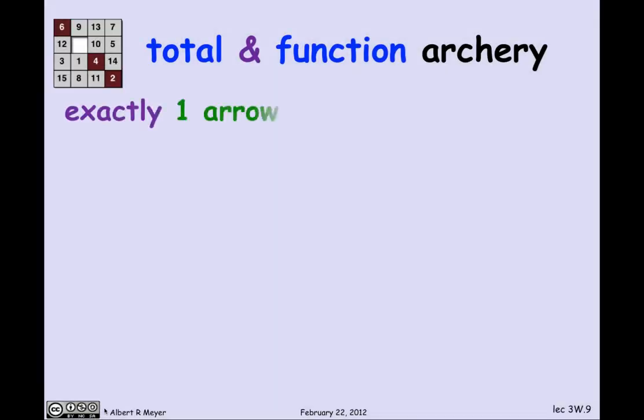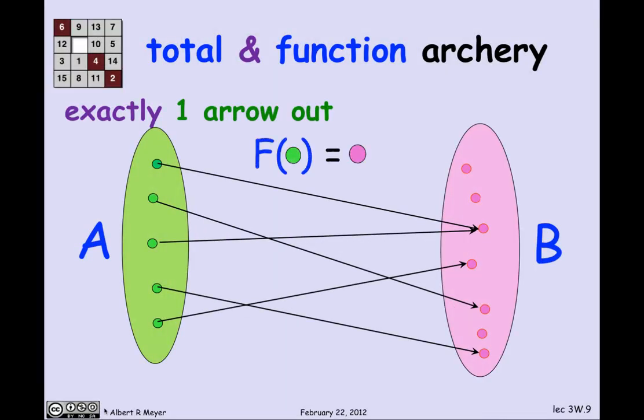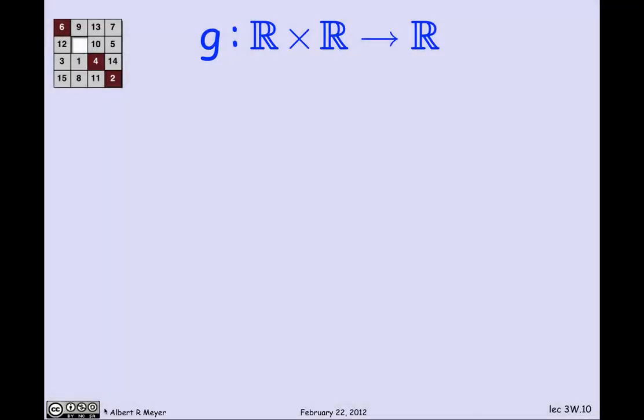Total and function means that there's exactly one arrow out. That's probably the most familiar case of functions. In lots of fields, it's assumed that functions are total. But the truth is that they often are not total, and people aren't careful about it.